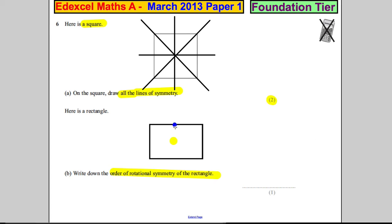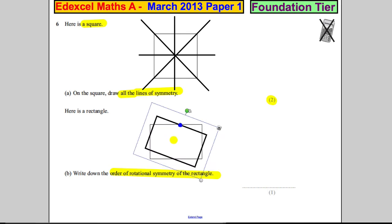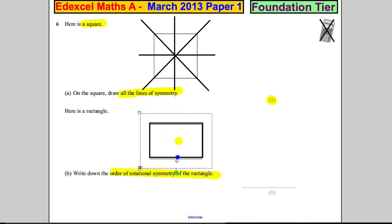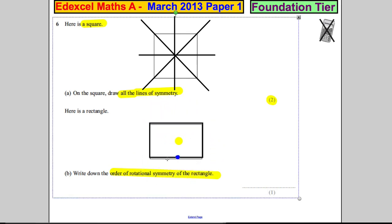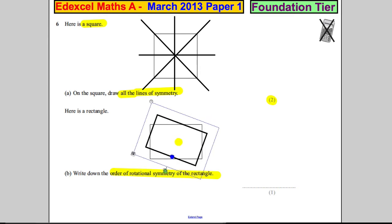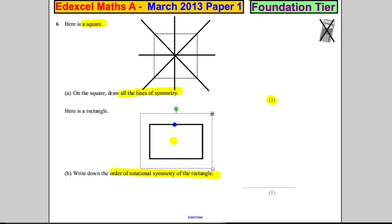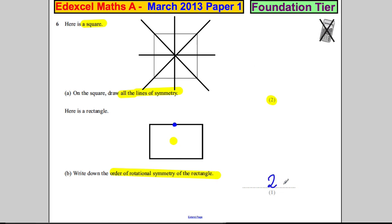How many times does the rectangle on my tracing paper fit back into the rectangle on the page? Let's twist it around — not there, not there. Once, and all the way back twice. So the order of rotational symmetry in this question is two.